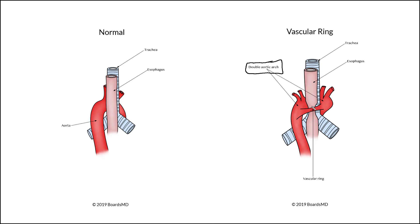Upon extension of the patient's neck, this vascular ring is going to come further posterior, thus being displaced off of the trachea and esophagus and leading to a relief of the patient's symptoms. This improvement with extension of the neck is highly characteristic of vascular rings on examinations.